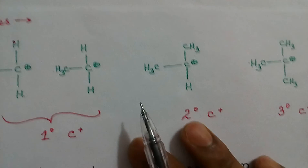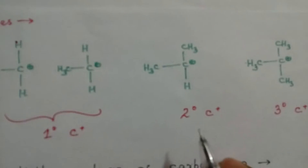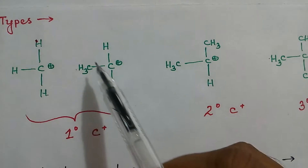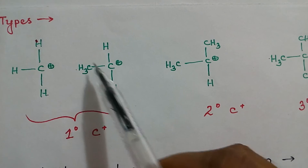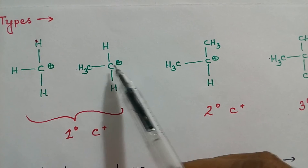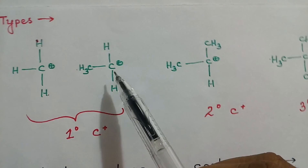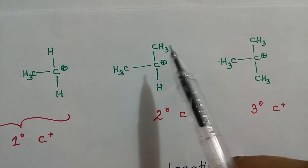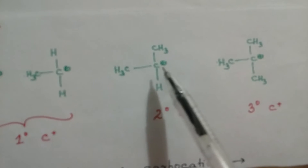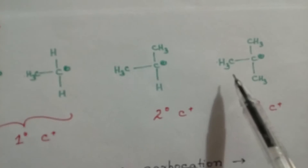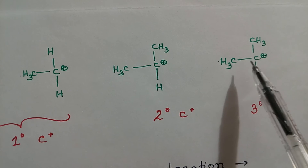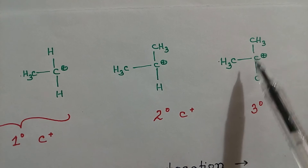Carbocations are of three types: primary, secondary, and tertiary. In a primary carbocation, one alkyl group or no alkyl group is attached to the positively charged carbon. In a secondary carbocation, two alkyl groups are attached to the positively charged carbon. In a tertiary carbocation, three alkyl groups are attached to the positively charged carbon.